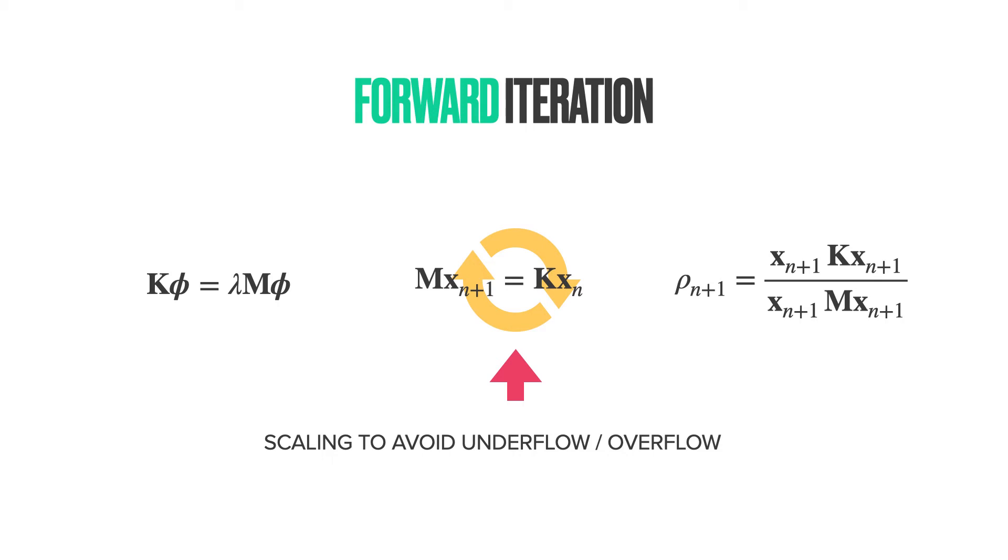First, we initially assume a certain eigenvector x0. This can be anything non-zero. Then we insert this value into this expression, mx is equal to kx, and solve for x1 using a linear solver. Then insert the solution on the right-hand side, and again repeat.